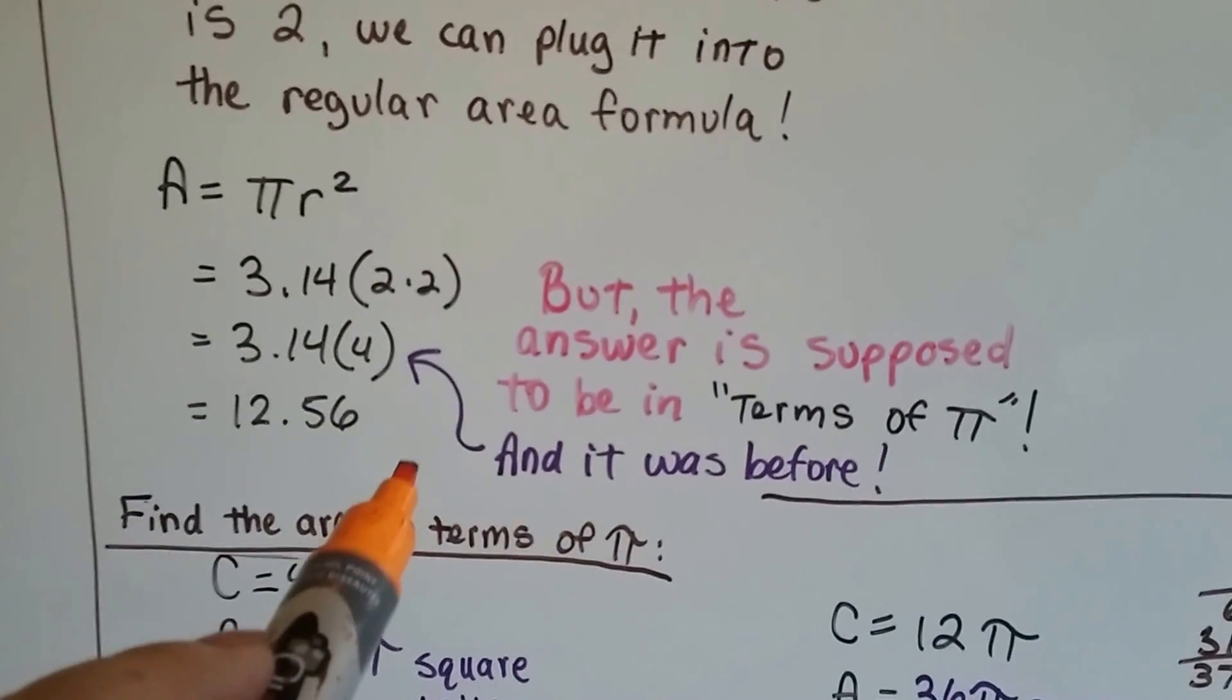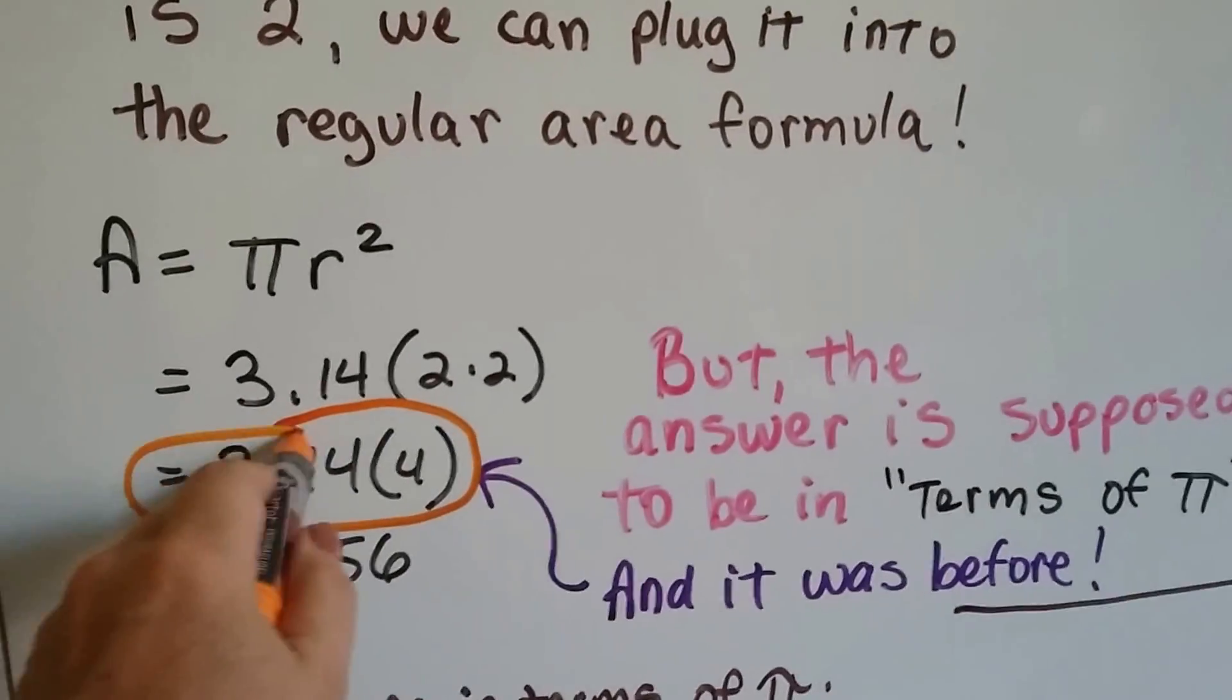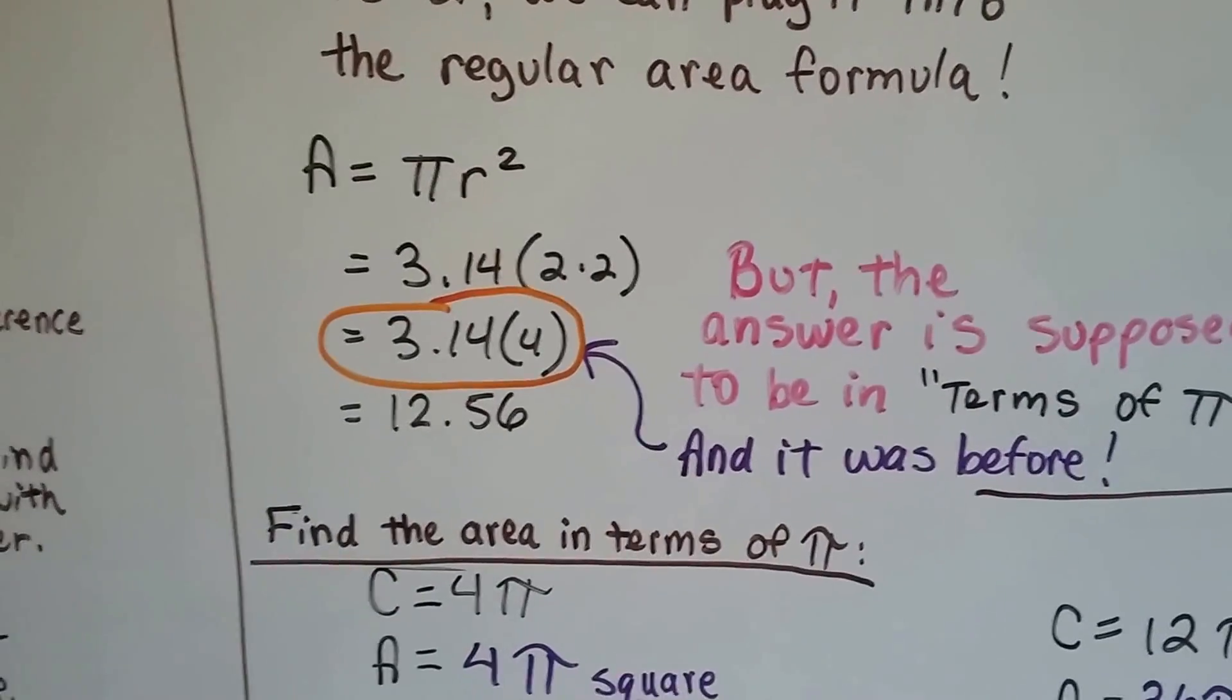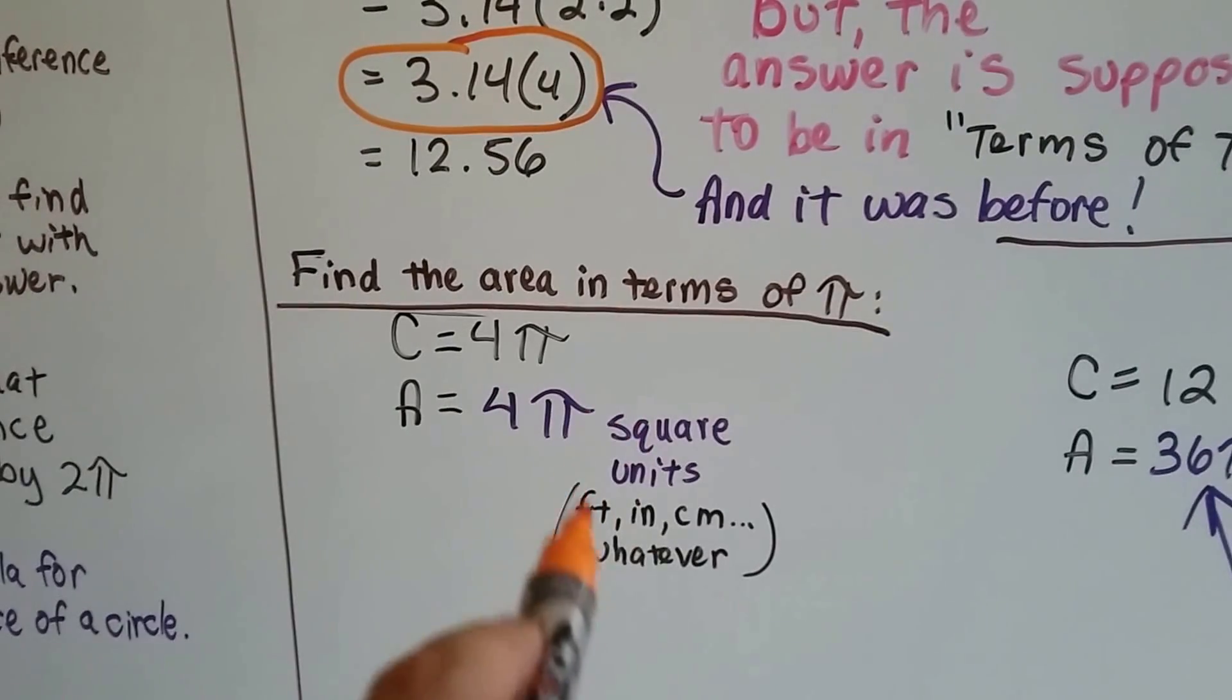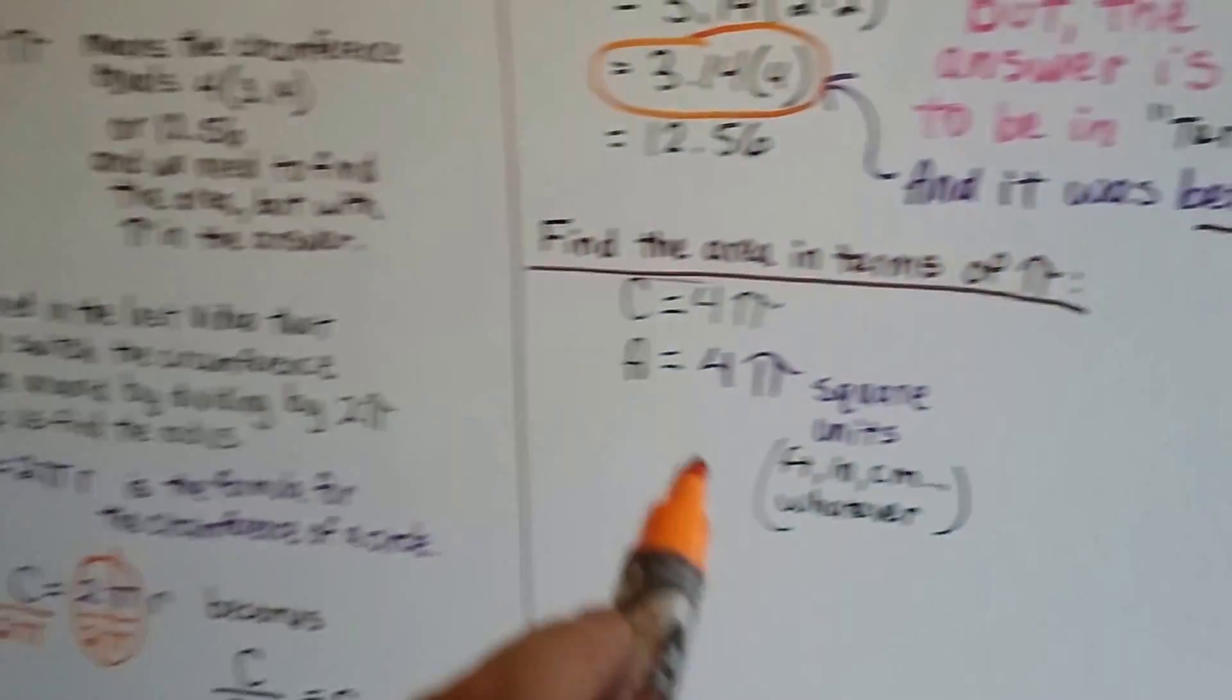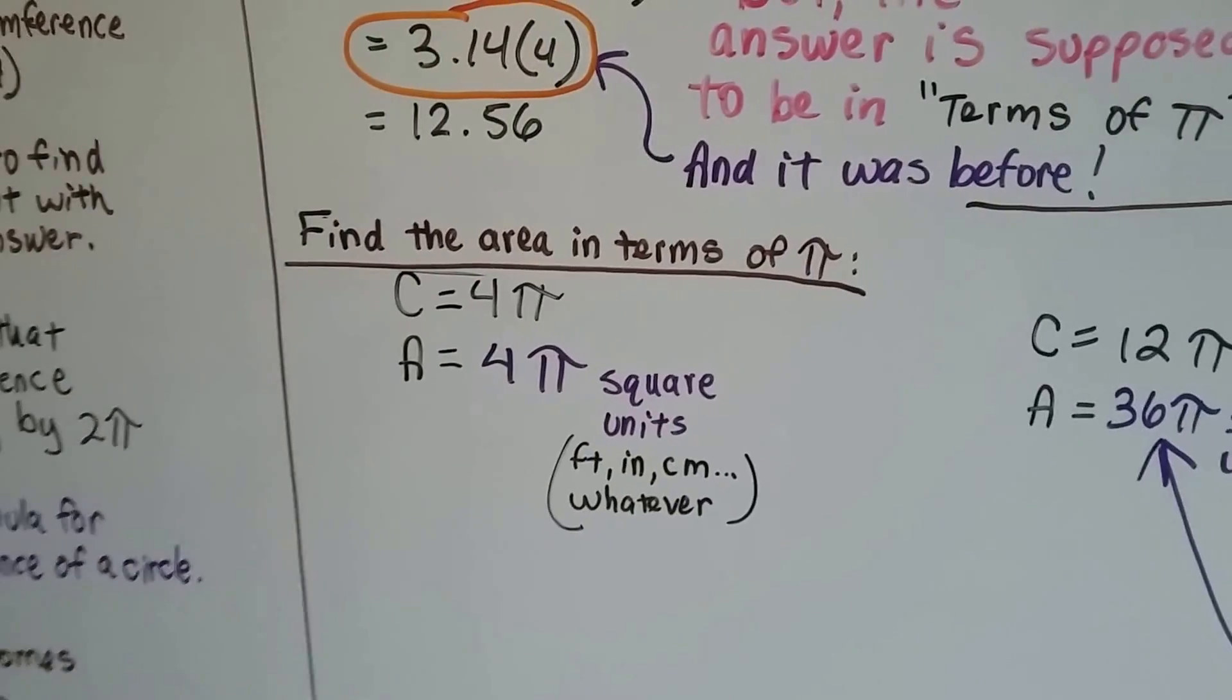Wait, but it said the answer is supposed to be in terms of pi. Well, it was, back here. It was in terms of pi right here. That's pi times 4. That means our answer is area equals 4 pi. And then we need to write square units because feet, inches, centimeter, whatever, we know our answer is going to be in square units, isn't it? It didn't tell us what the square units were, so we write the words square units. See? We just gave an answer in terms of pi.